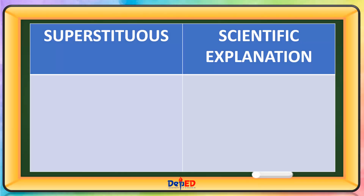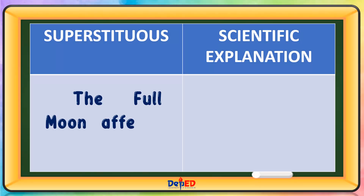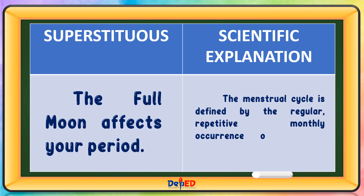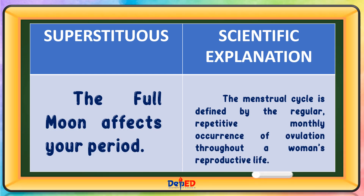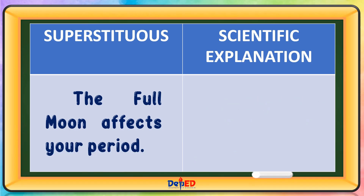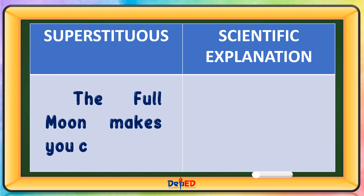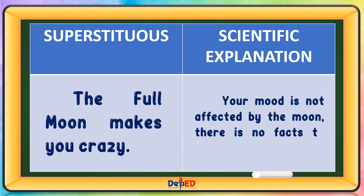Superstitious Belief: The full moon affects your period. Scientific Explanation: The menstrual cycle is defined by the regular, repetitive, monthly occurrence of ovulation throughout a woman's reproductive life. Superstitious Belief: The full moon makes you crazy. Scientific Explanation: Your mood is not affected by the moon — there is no fact to support that notion.